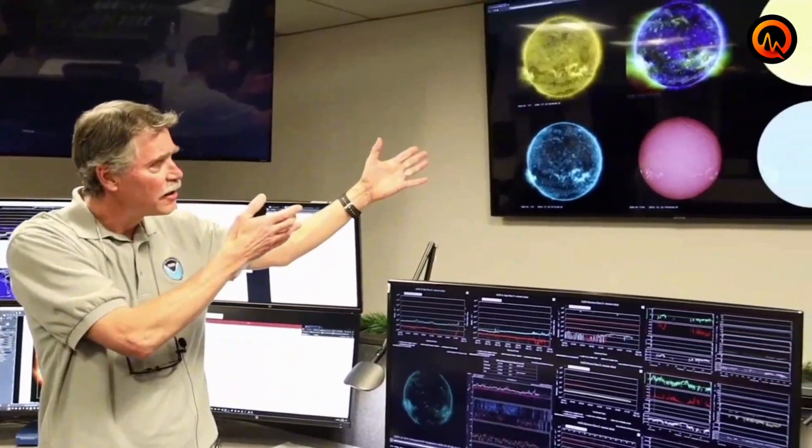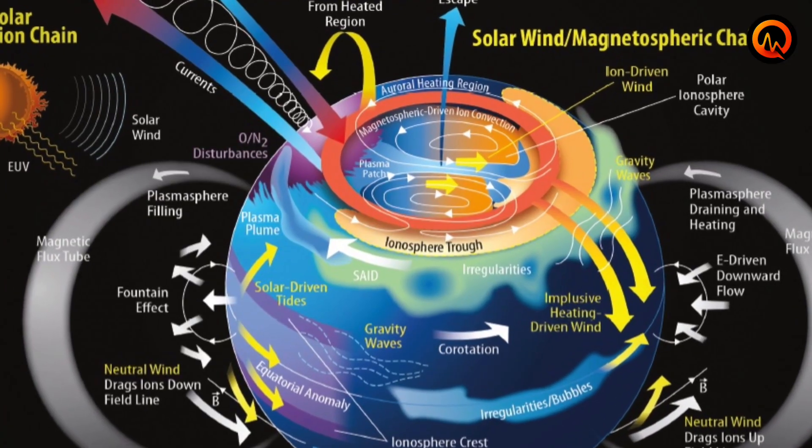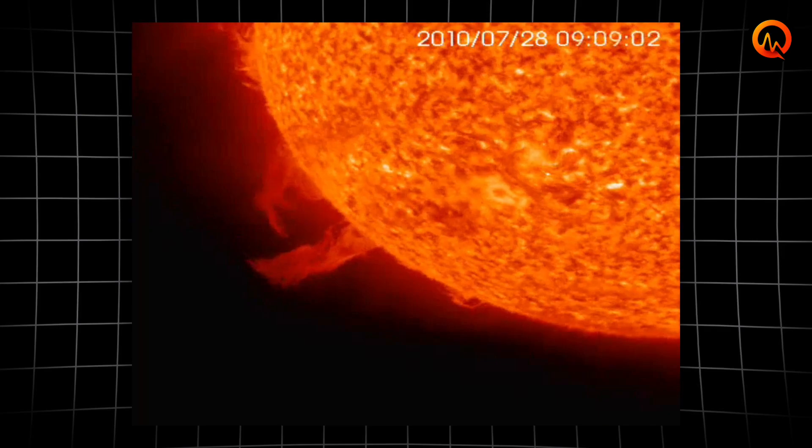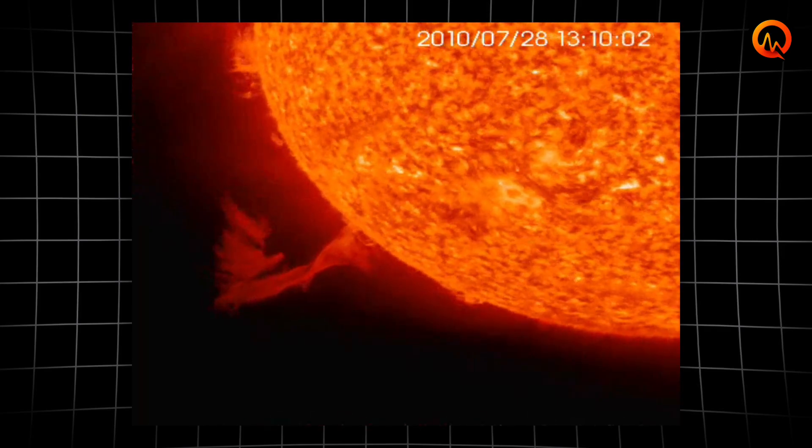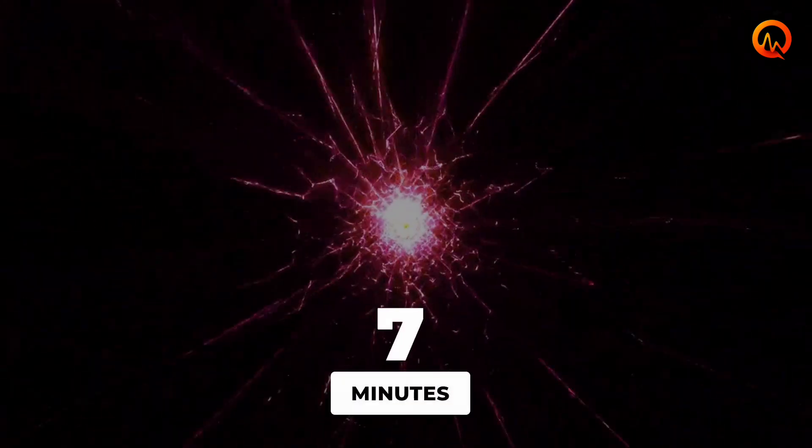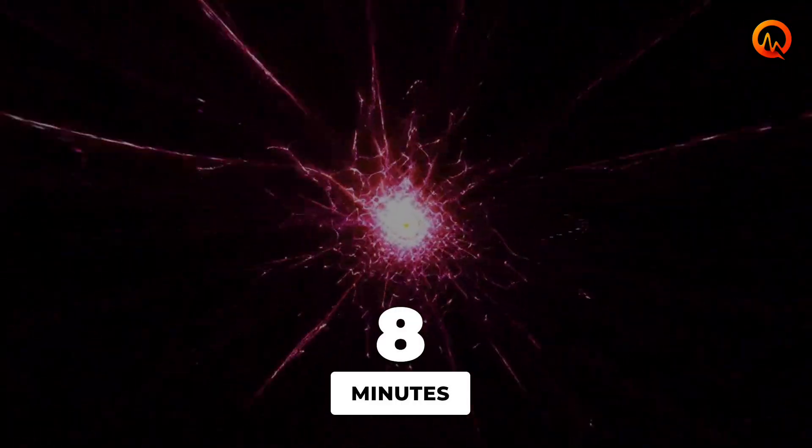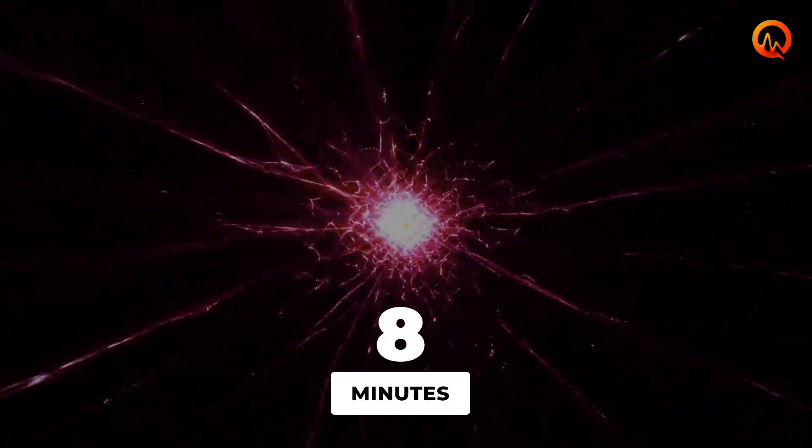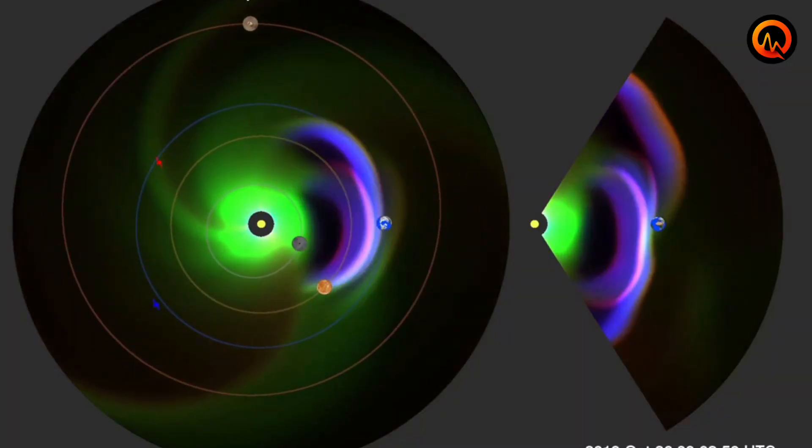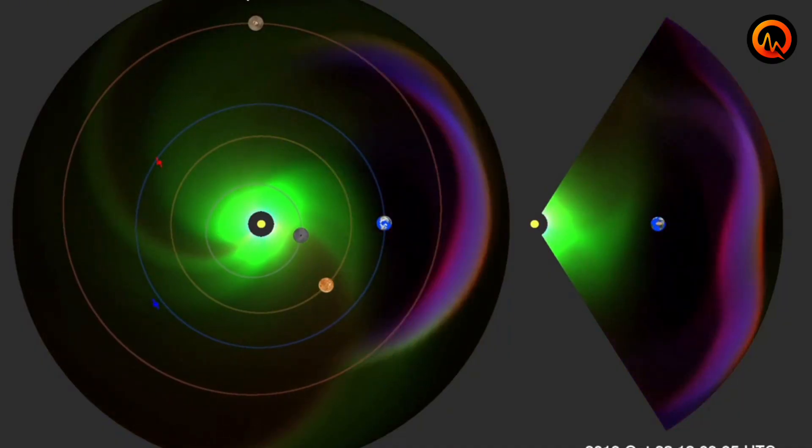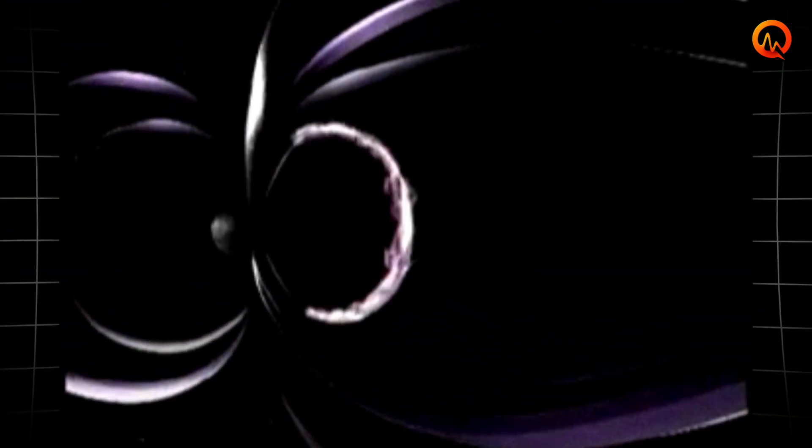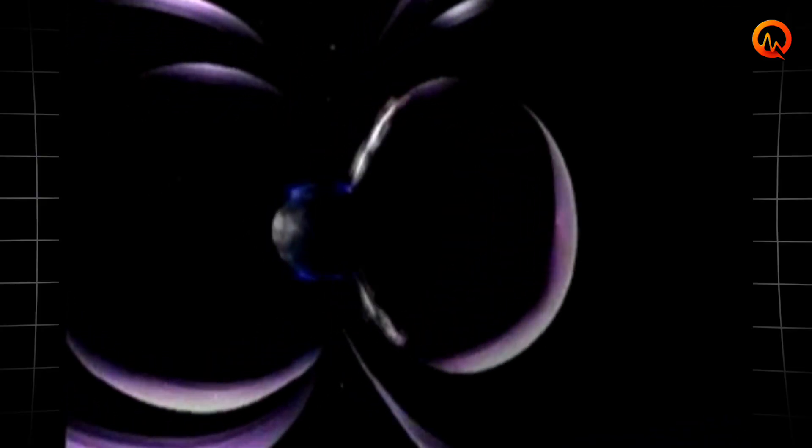According to emerging research on electromagnetic and geological interactions, solar flares release massive bursts of electromagnetic energy that travel from the Sun to Earth in approximately eight minutes. When these electromagnetic pulses interact with Earth's magnetosphere, they create powerful electrical currents that penetrate deep into the planet's crust.